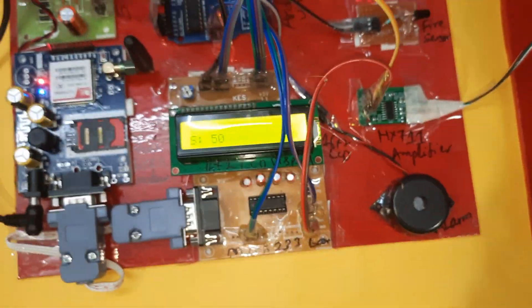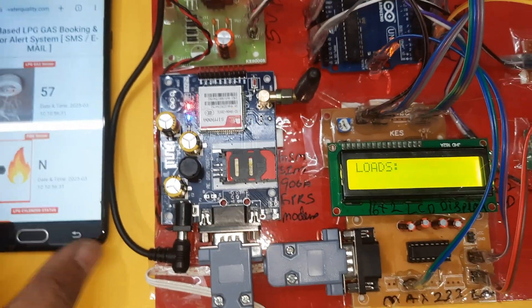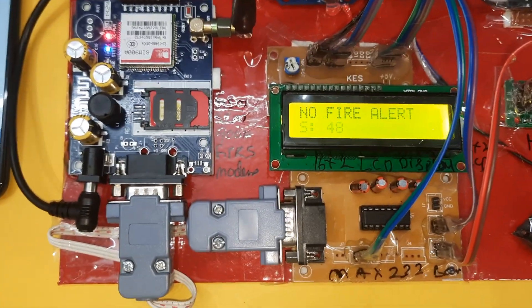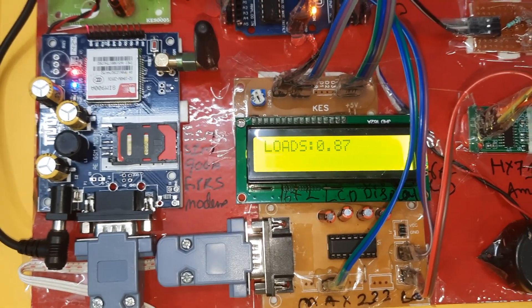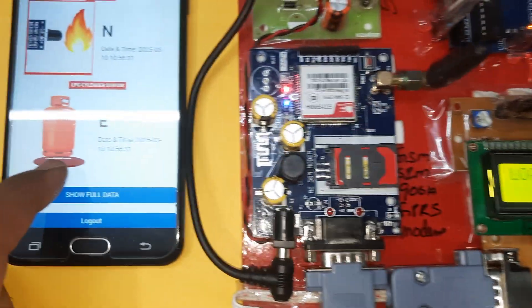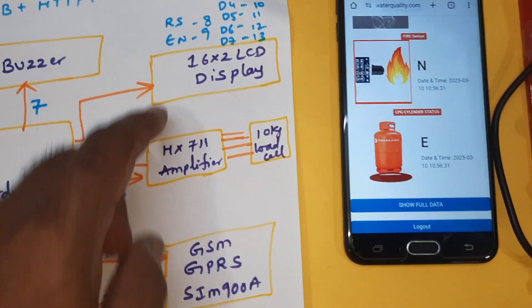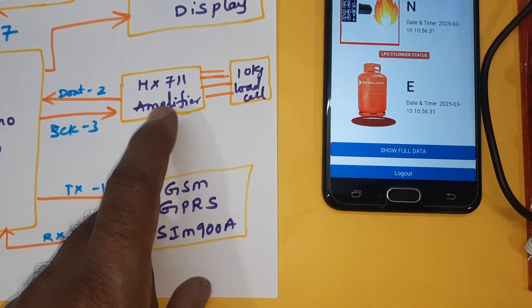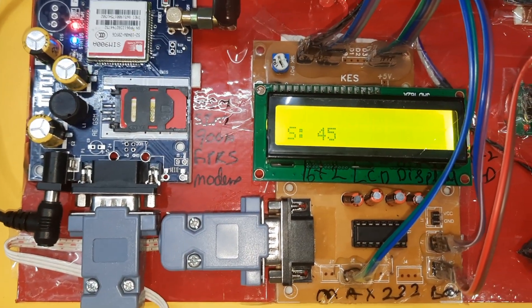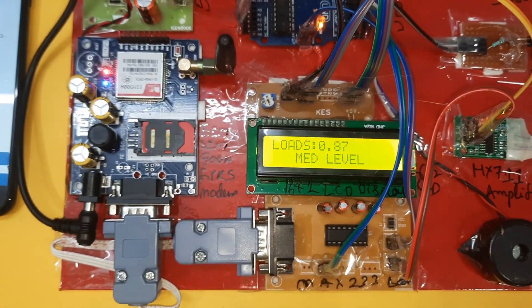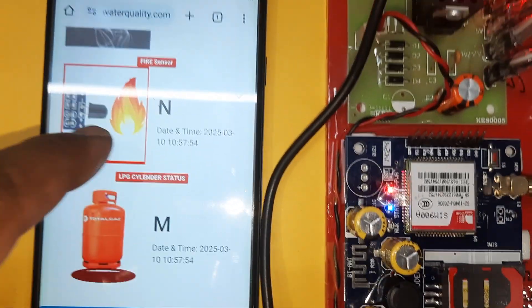Going to mid level — 5 counts checked. After the 10th count, data is sent to the server. No fire alert, cylinder is mid level, no gas alert. Block diagram components: fire sensor, gas sensor, Arduino, 16x2 LCD display, 10 kg load cell, HX711 amplifier, I2C protocol, GPRS modem, TX and RX pins 0 and 1. Web link success — mid level confirmed.